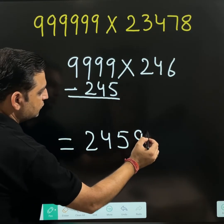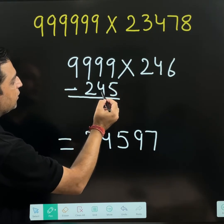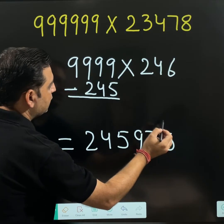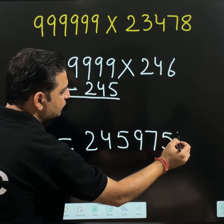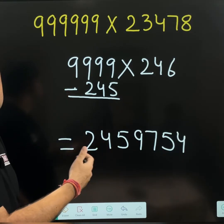Then 9 minus 2, 7. 9 minus 4 is 5. And finally 9 minus 5 is 4. This is the answer of the product.